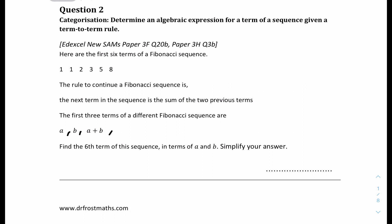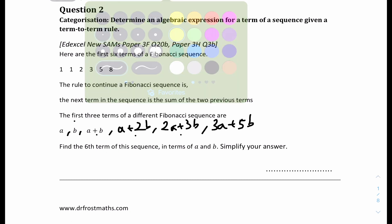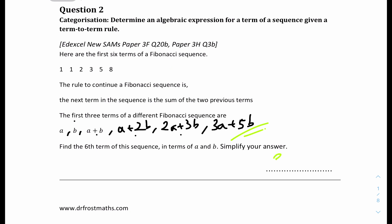The fourth term will be A plus 2B, because you're adding A plus B and B. The fifth term will be 2A plus 3B, because you're adding the third and fourth terms. The sixth term will be the fourth plus fifth, which is 3A plus 5B. So the answer is 3A plus 5B.